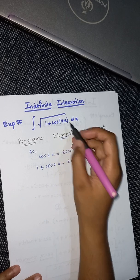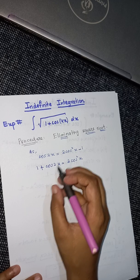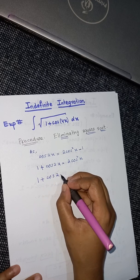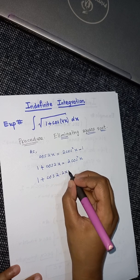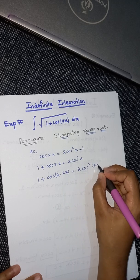We do not need cos 2x, we need 4x. So I multiply the angle with 2, then I will get 1 plus cos 2 times 2x, and after that cos squared 2x.